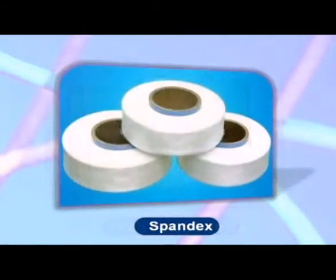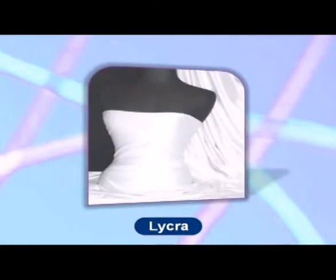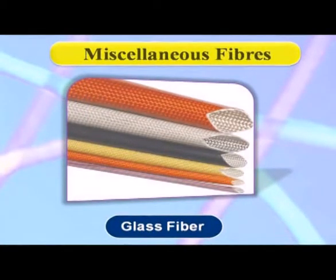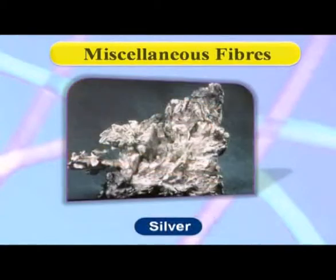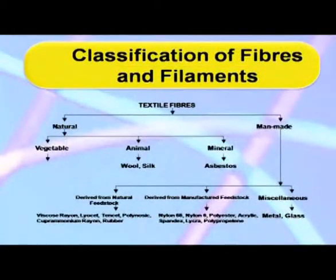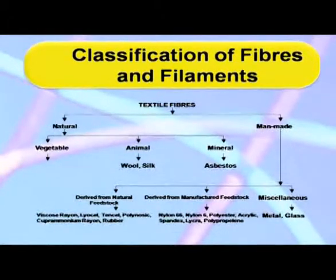Elastomeric fibers such as Spandex and Lycra are also similarly made. Miscellaneous fibers include glass fibers obtained from silica, and metallic fibers like silver and gold, which are man-made fibers best put under this category.